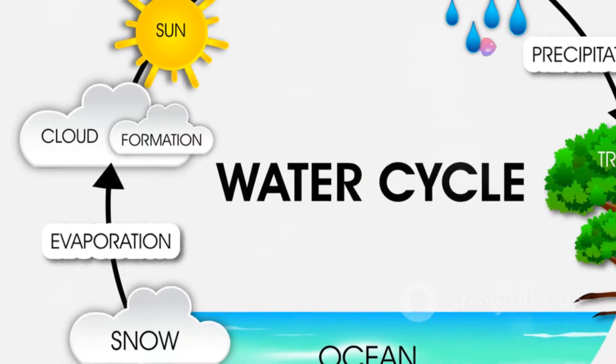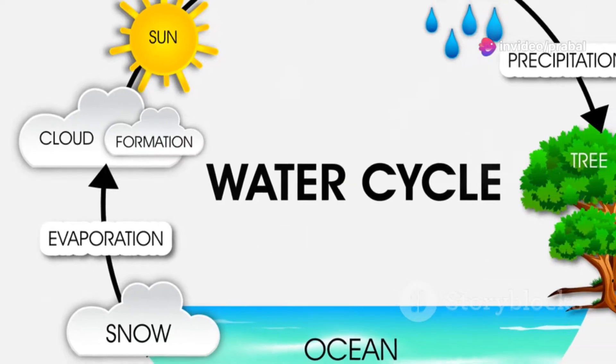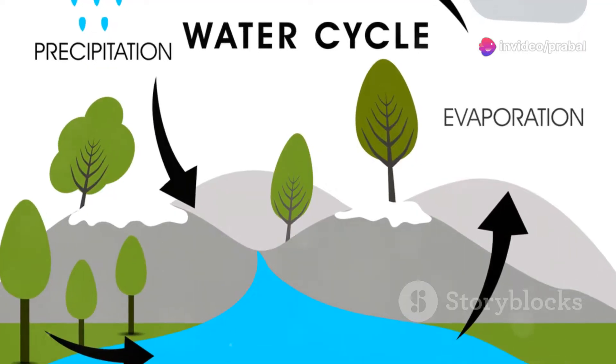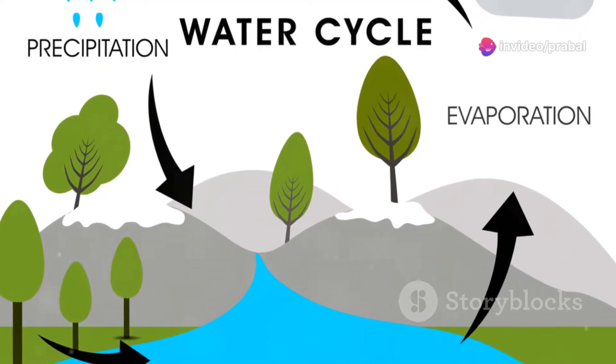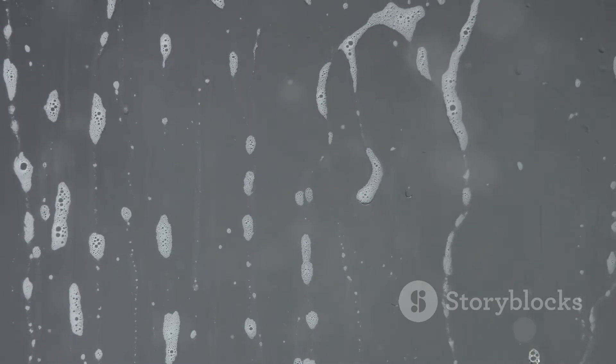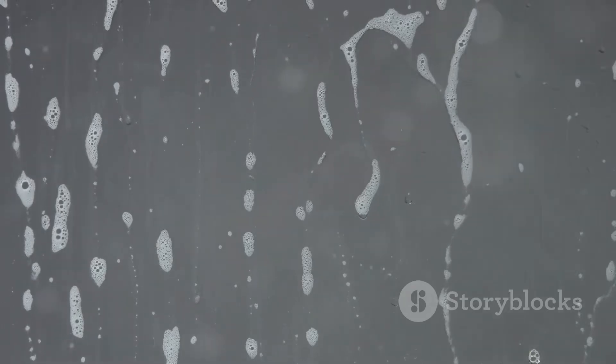Evaporation is like water's magic trick. It transforms liquid water into an invisible gas called water vapor, which then floats up into the atmosphere. Evaporation is a key part of the water cycle, the continuous movement of water on, above and below the Earth's surface. It's like a giant invisible water slide.